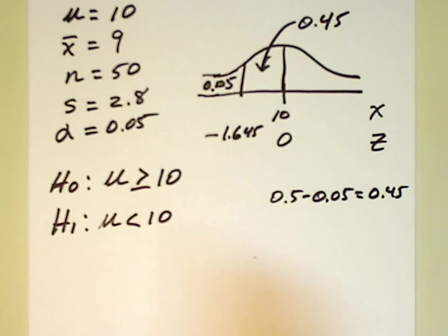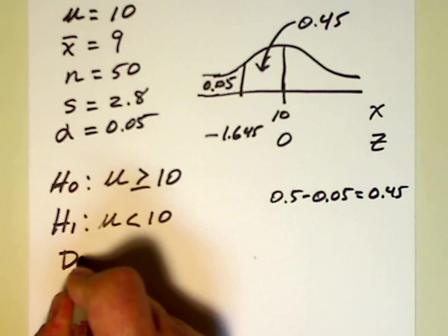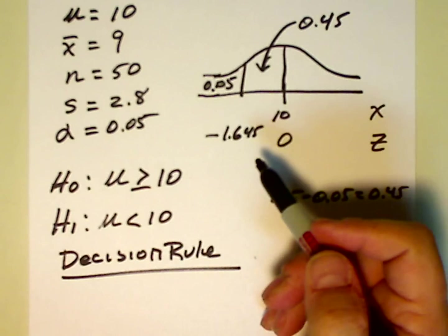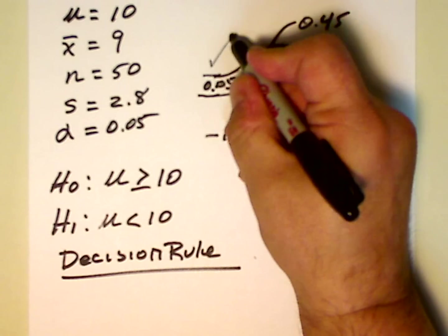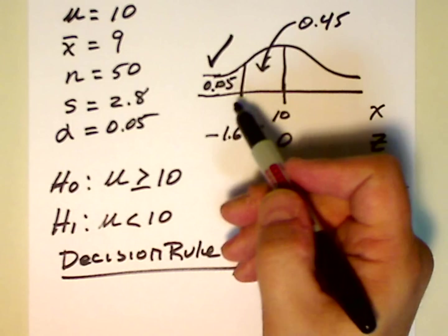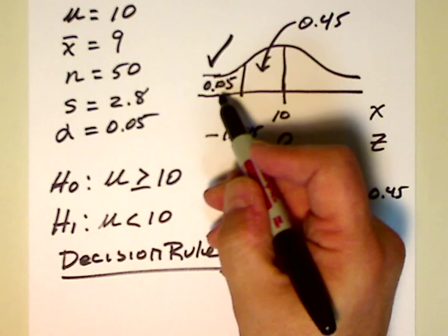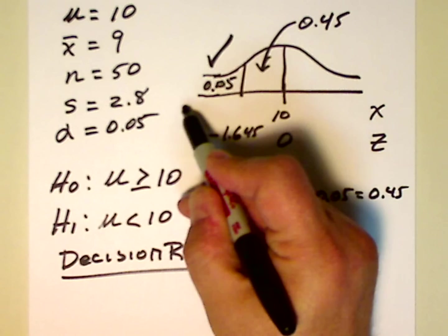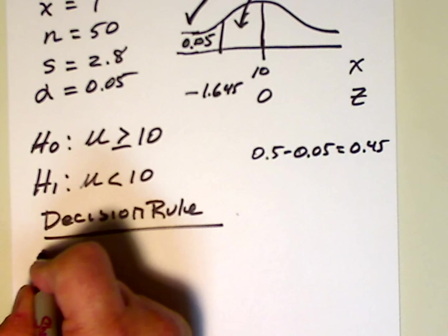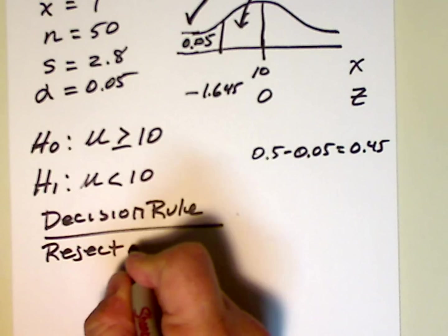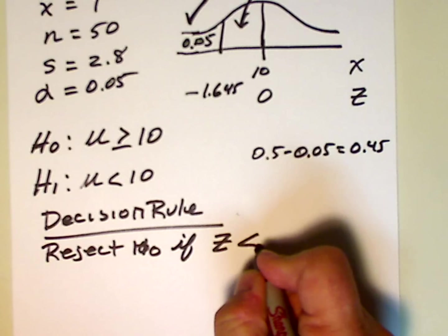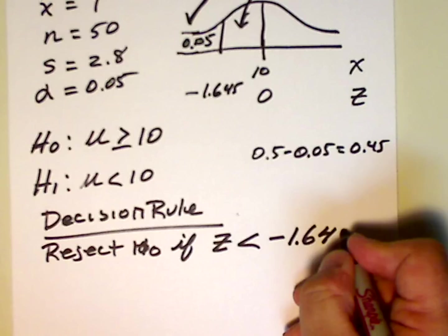Now we need to set up our decision rule. When are we going to reject the null? We're going to reject the null if z, the test statistic that we calculate, falls to the left of negative 1.645. The decision rule is: reject H0 if z is less than negative 1.645.